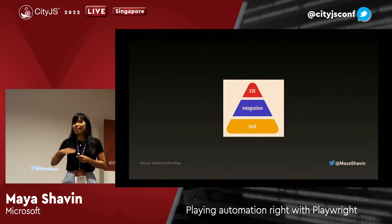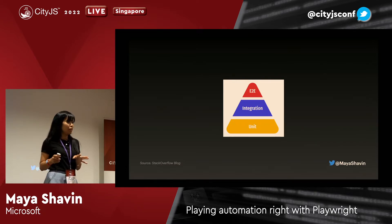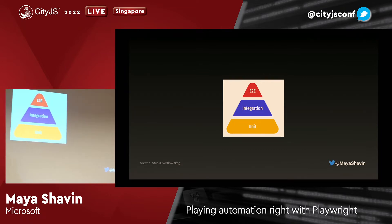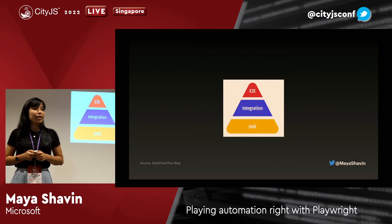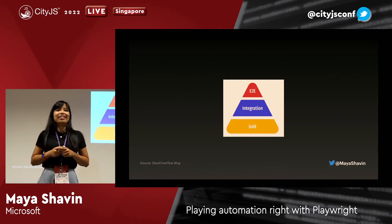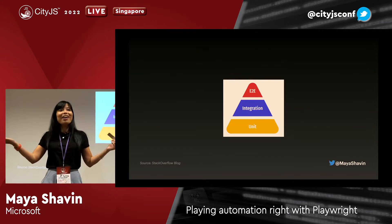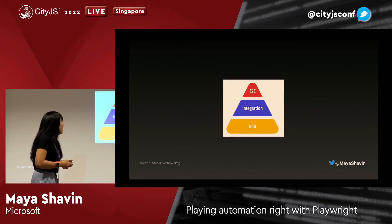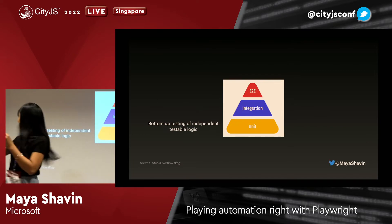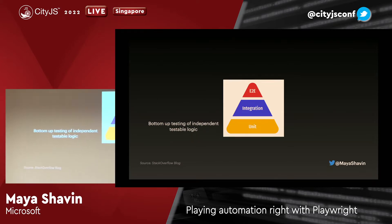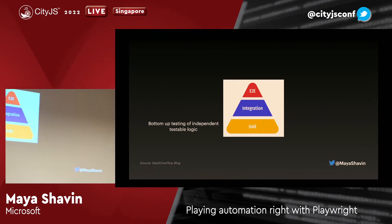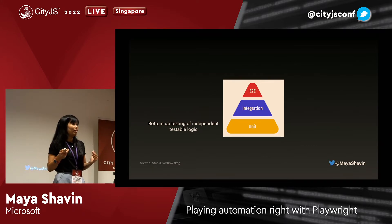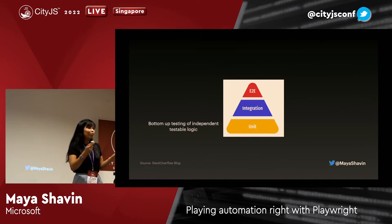There are three main layers of testing that most of us probably already know. We have unit testing, we have integration testing, and we have end-to-end testing — a bottom-up approach. Unit testing is more like a bottom-up approach where you test the lowest level of your code, which is very isolated and simple — you just test whether it works: if/else, and so on.